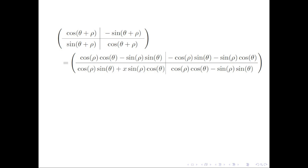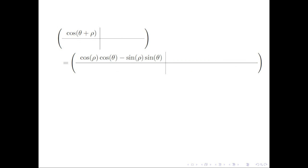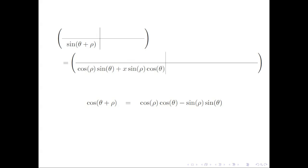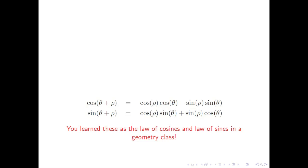Now let's put this all together. If you focus on the top-left element in both matrices, you find how the cosine of theta plus rho relates to the cosine and sine of theta and the cosine and sine of rho. Similarly, if you focus on the bottom-left element of both matrices, you find how the sine of theta plus rho relates to the cosine and sine of theta and the cosine and sine of rho. What we have just justified through matrix-matrix multiplication are the law of cosines and the law of sines which you had learned in geometry class.